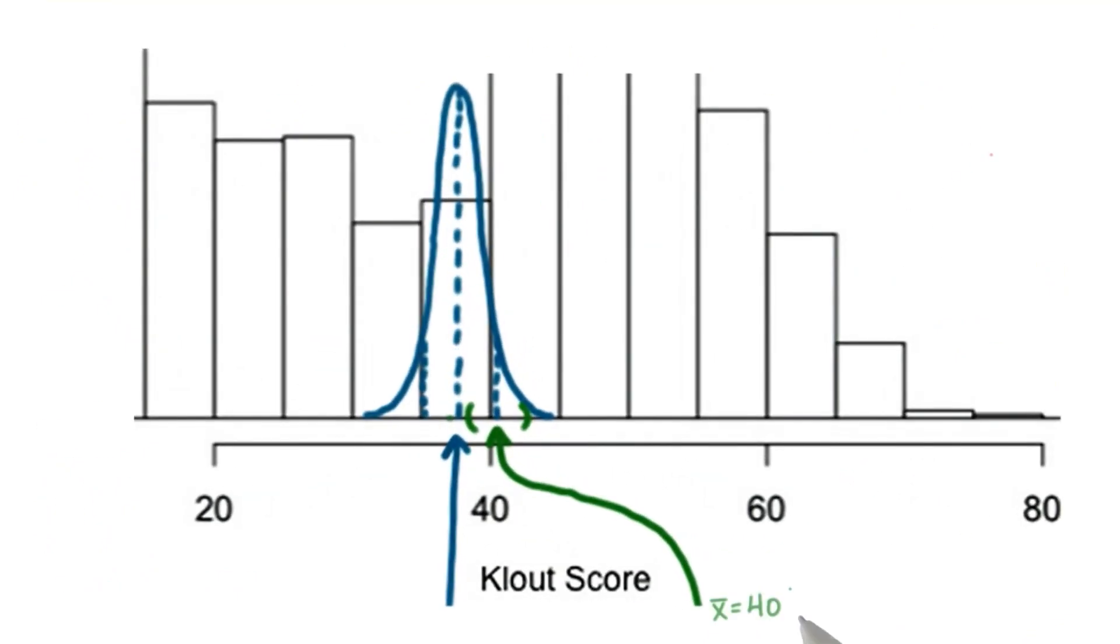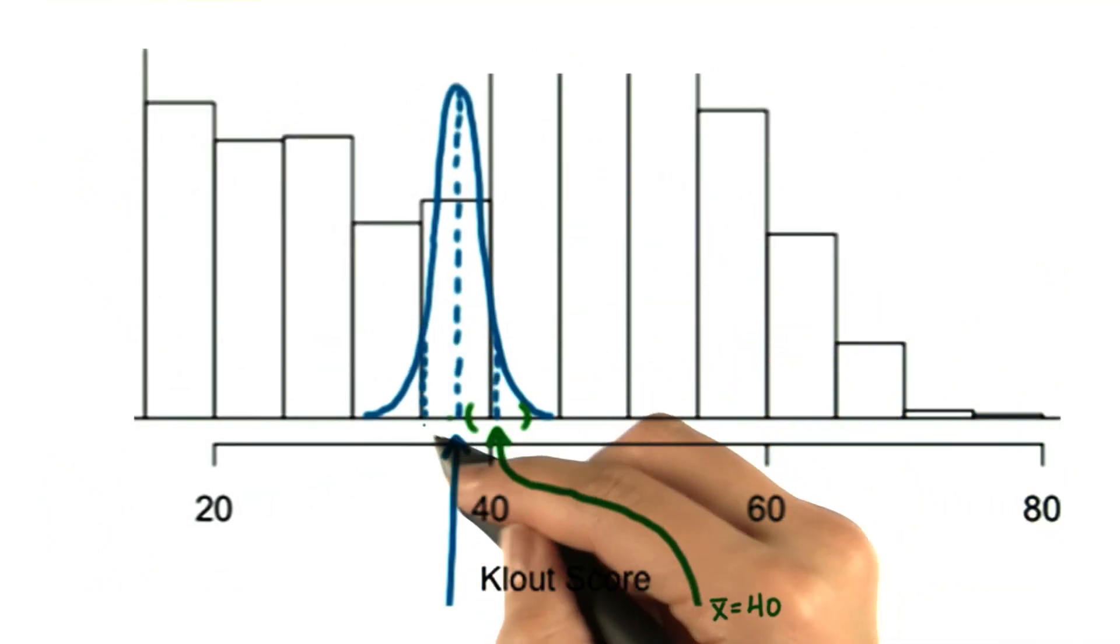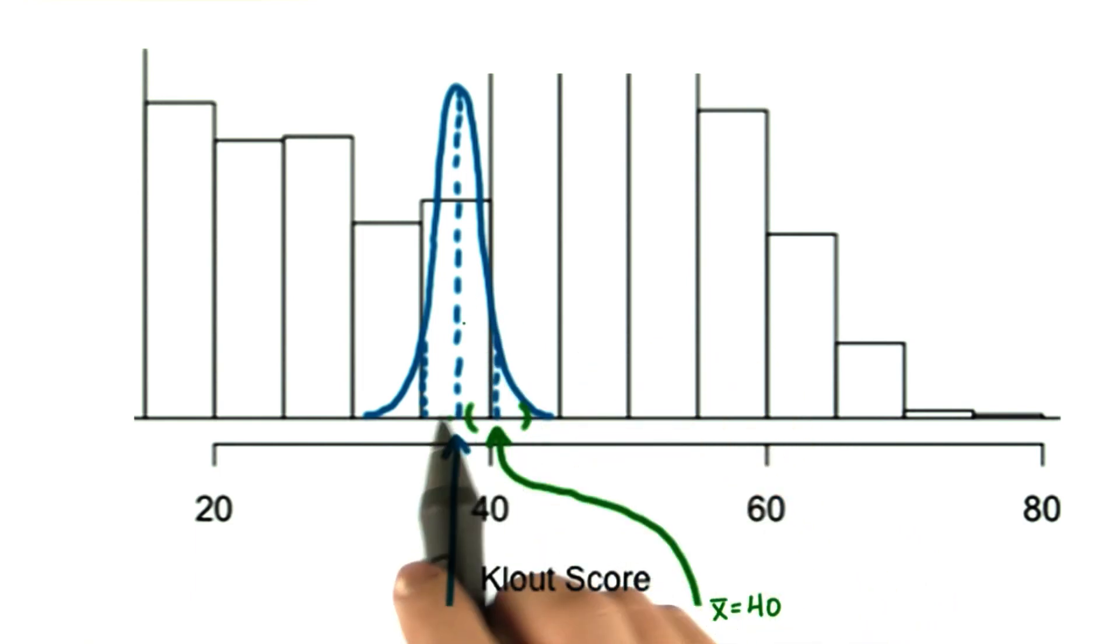Let's zoom in here a little bit. We know that 95% of sample means will be within two standard deviations from the mean.